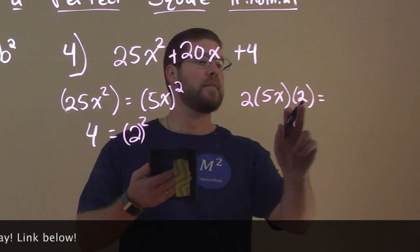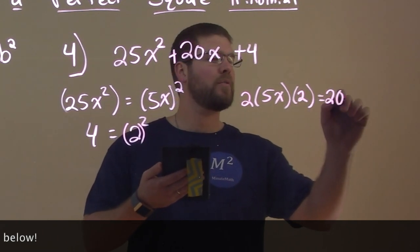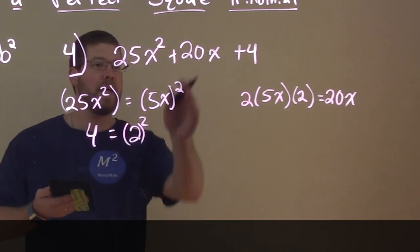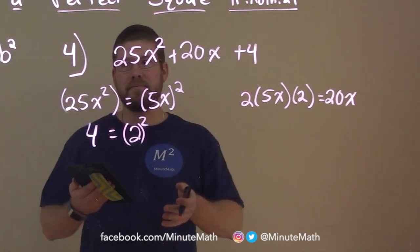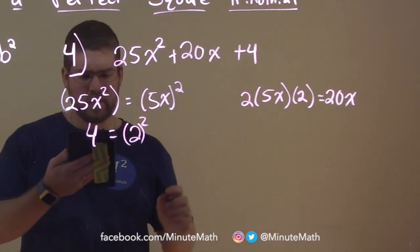2 times 5 is 10, times 2 is 20, and we have 20x, and it does. So therefore, we can really use our rule for the perfect squares here pretty easily.